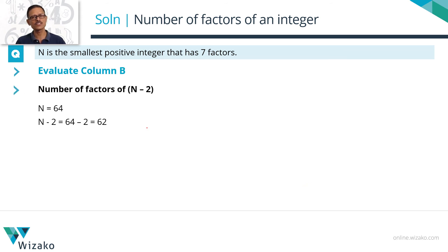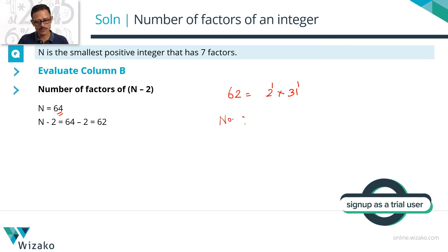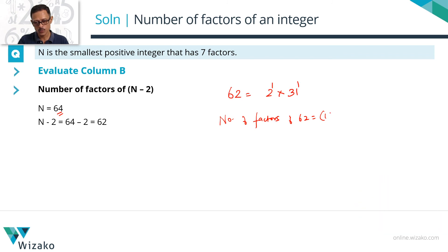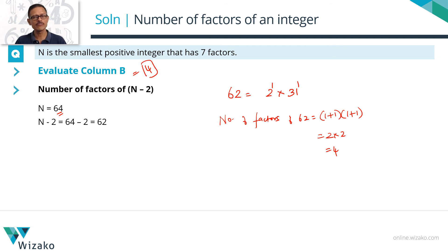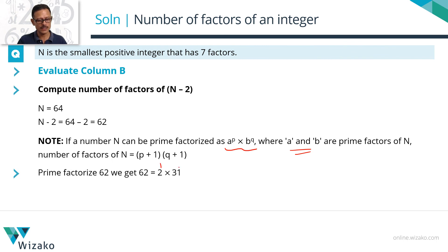Column B: number of factors of N minus 2. N equals 64, so N minus 2 equals 62. Prime factorizing 62 gives 2 to the power 1 times 31 to the power 1. Incrementing both powers by 1 and multiplying: (1+1) times (1+1) equals 2 times 2 equals 4. So the number of factors of 62 is 4, and the value of quantity B is 4.